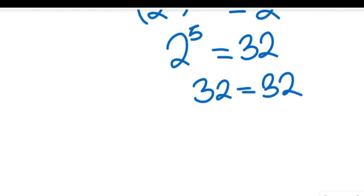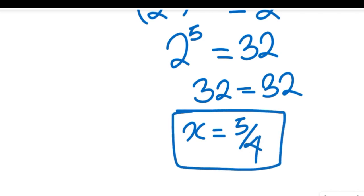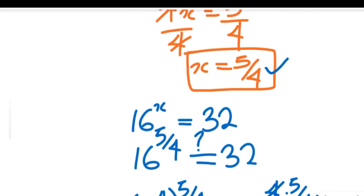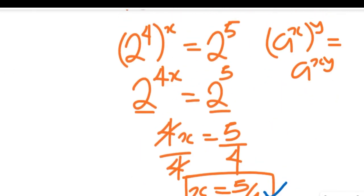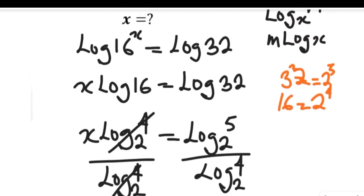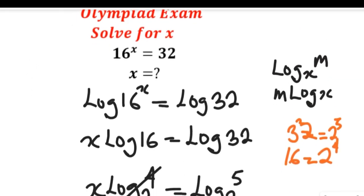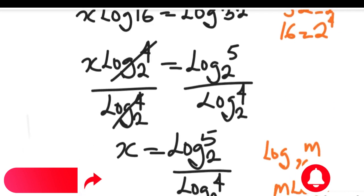So 32 on the left-hand side equals 32 on the right-hand side. That tells us that x equal to 5 divided by 4 is the solution that satisfies the exponential equation 16 to the power of x equal to 32.